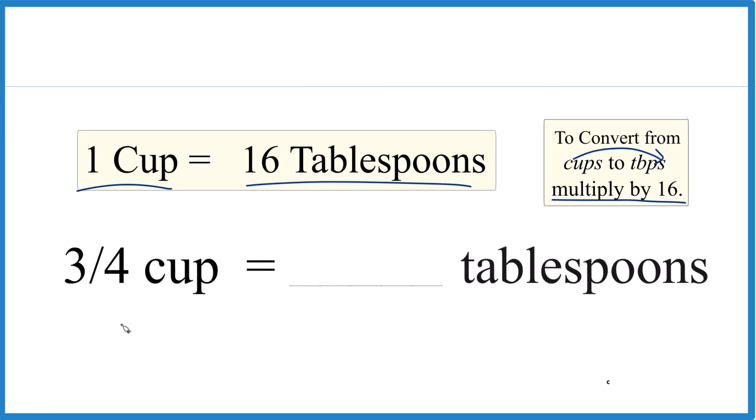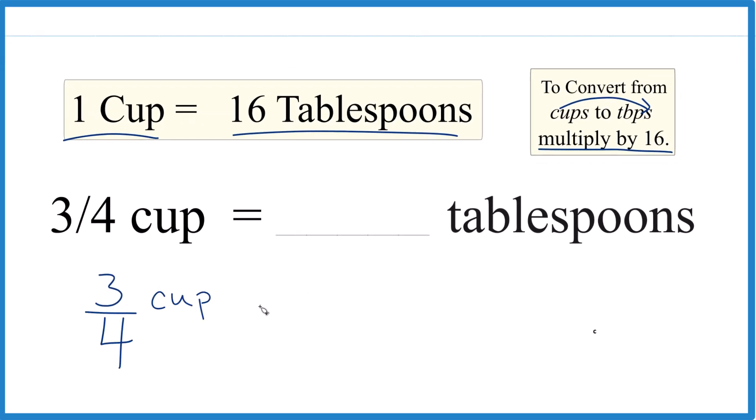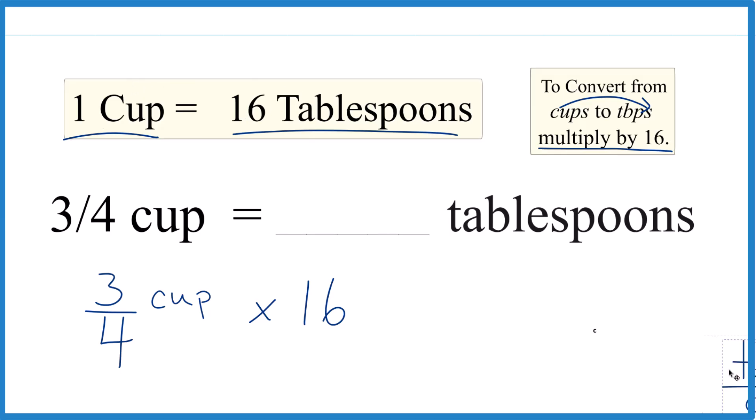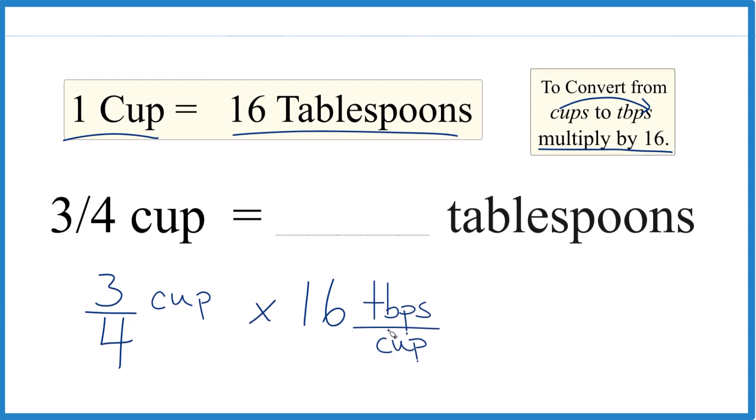We're going to take 3/4 of a cup and multiply that times 16 tablespoons per cup. You can think of that as 16 tablespoons per one cup.